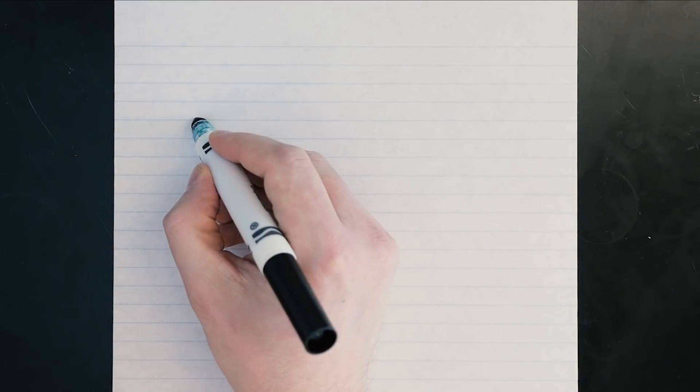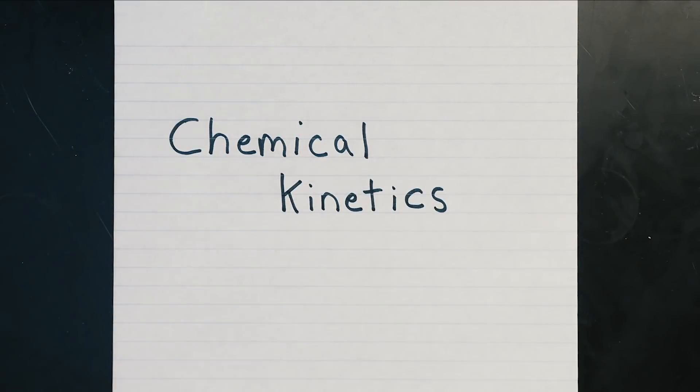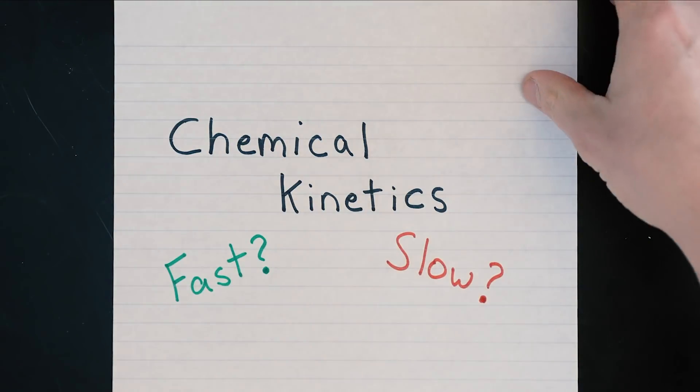Chemical kinetics is the study of the speed at which chemical reactions take place and how various factors affect that speed. So what is it that makes a particular reaction fast or slow?